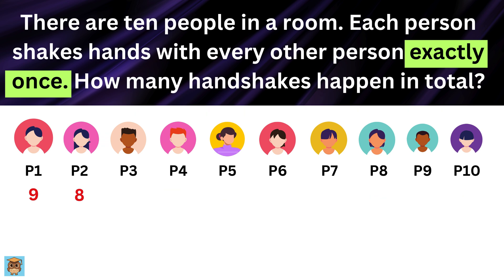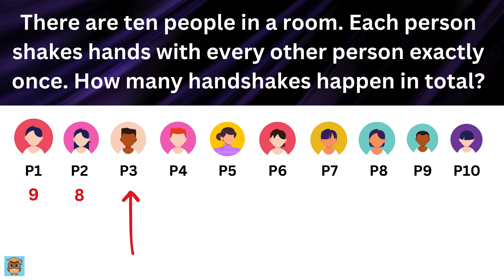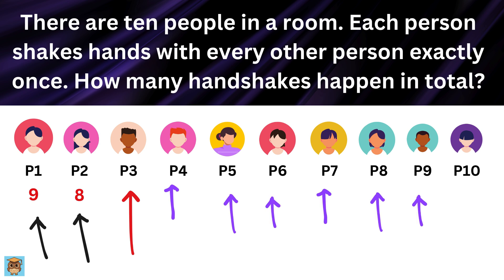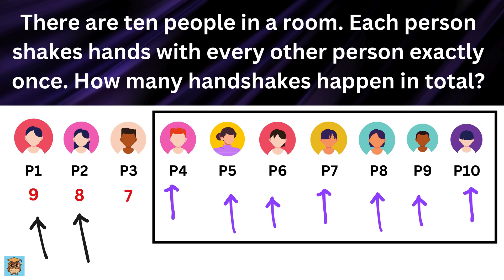Then we move to Person 3. Person 3 has already shaken hands with Person 1 and Person 2, so they only shake hands with the remaining seven people: Person 4, Person 5, and so on, up to Person 10. That's seven handshakes for Person 3.